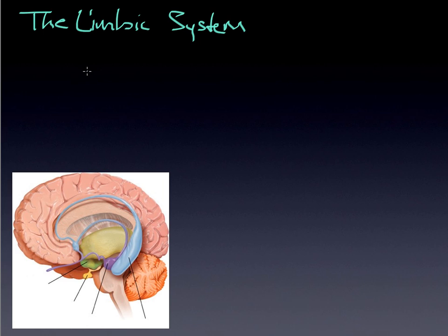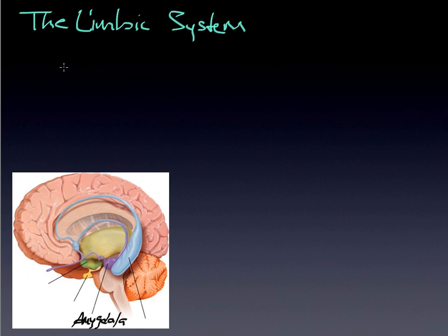The first one I'll talk about is the amygdala. I'm going to fill in this diagram down here so we can do this together. The amygdala is a little structure underneath — it's about a lima-bean-shaped cluster. The amygdala has a lot to do with aggression and the aspects having to do with fear.